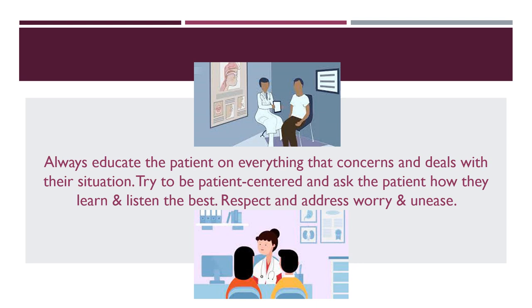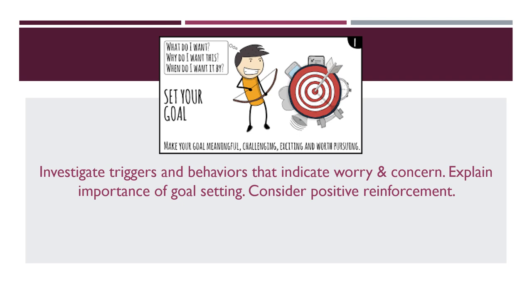We also want to build a deeper relationship with the patient by investigating triggers and behaviors that could indicate their worry and concern. For example, if we start talking about an aggressive treatment and we can see that their body language is very nervous and worried, we might want to take a step back and realize this could be a trigger, keeping in mind that we may want to take a different approach next time. Also included in this intervention is explaining the importance of goal setting and considering positive reinforcement for goal achievement.